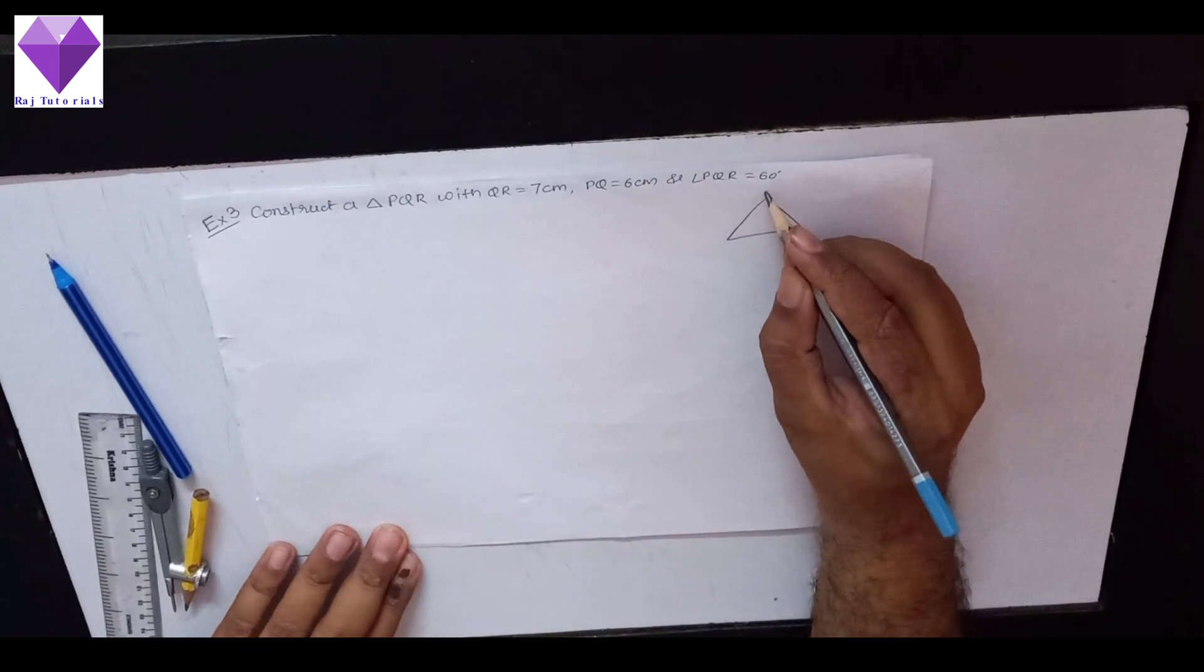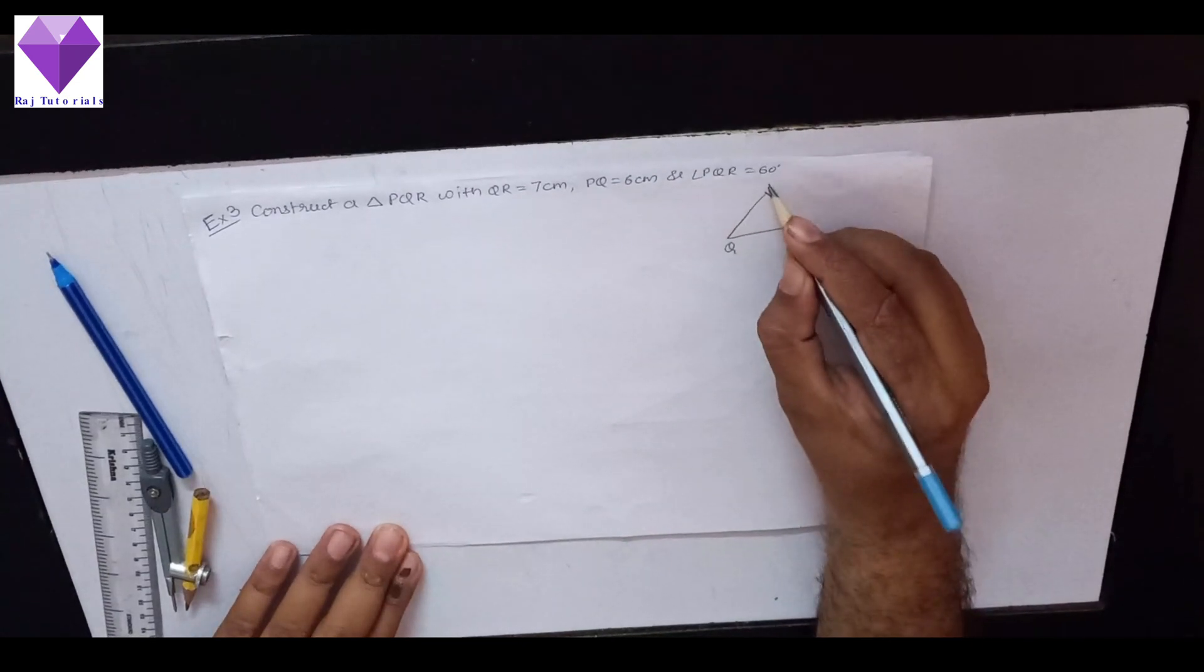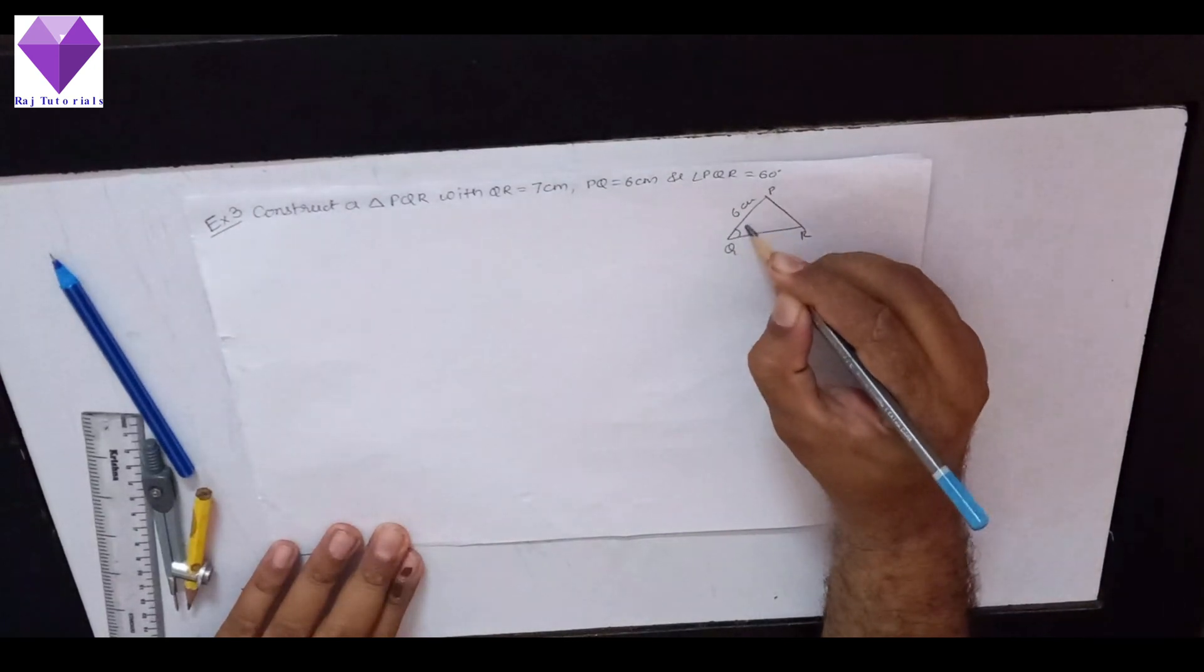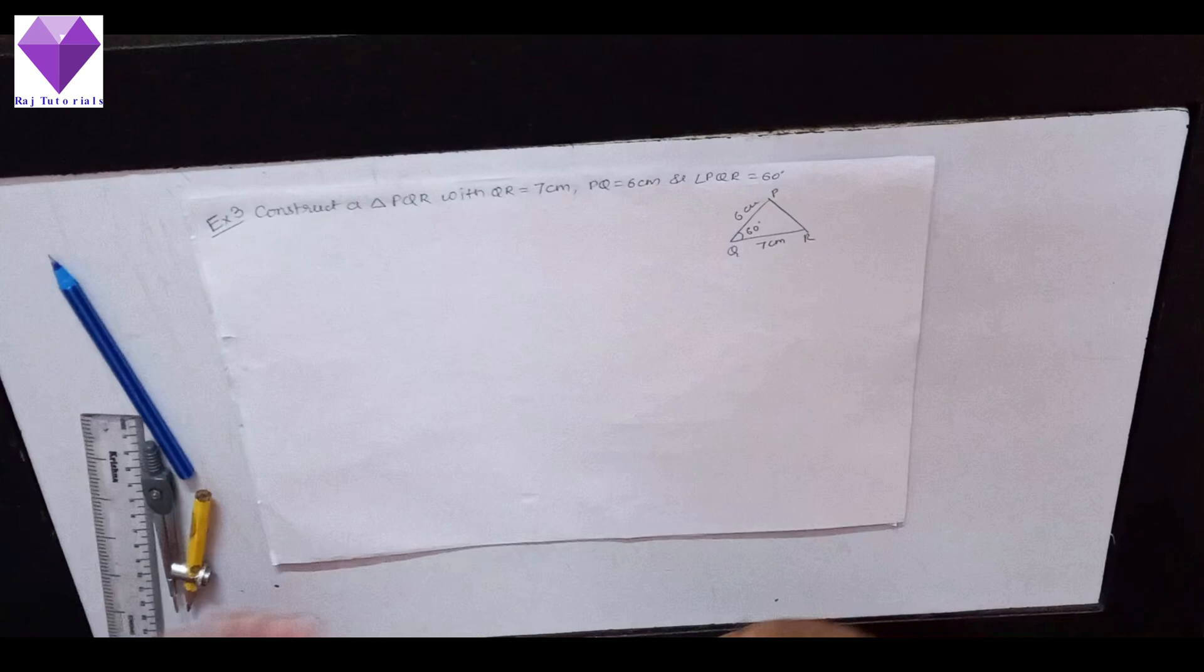So first of all, if I make the rough sketch of the triangle, this is QR, this is P. Now PQ is 6 cm, this angle will be 60 degree and QR is 7 cm. So to draw that,